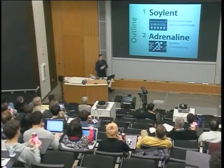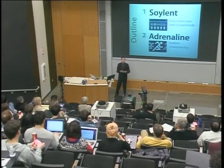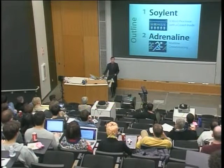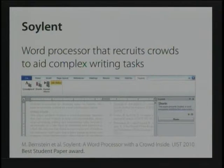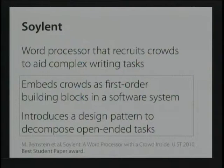I'm going to focus on two main systems. The first is called Soylent — a word processor with a crowd inside. The goal is to convince you that this entire agenda is worth pursuing. In the second half, I'll introduce a system called Adrenaline, which takes these concepts and tries to make them happen in real time for interactive systems. Let me start with Soylent. Soylent is people — a word processor that recruits crowds to aid complex writing tasks. We're embedding crowds as first-order elements of a software system.